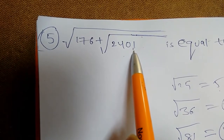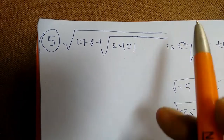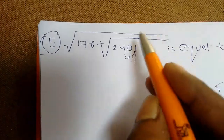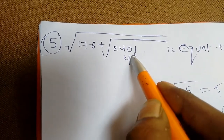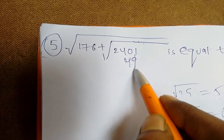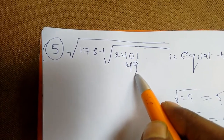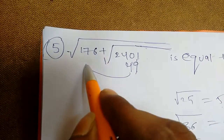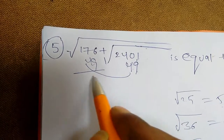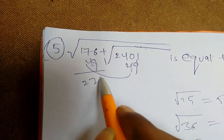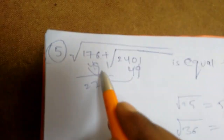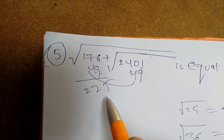This is 49. This is 2, 4, 0. This is 49. This is 225. This is 176 plus 49 is 225.